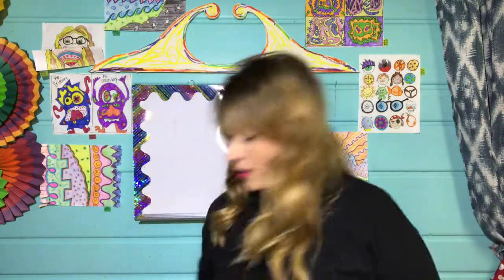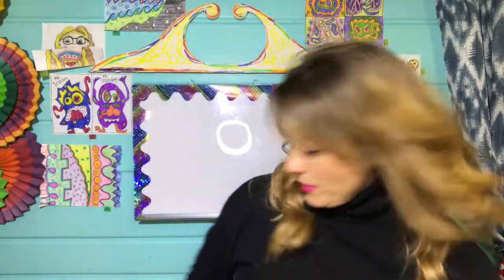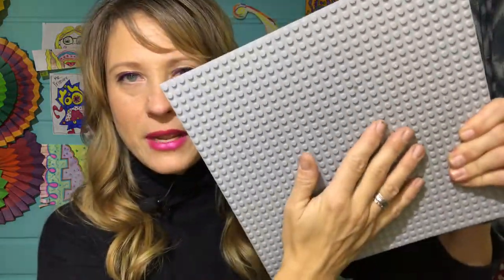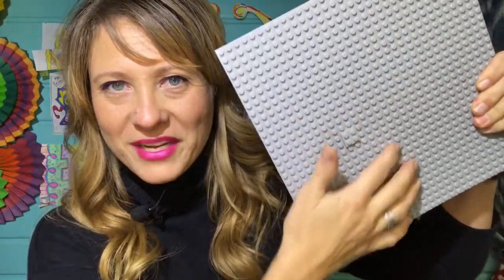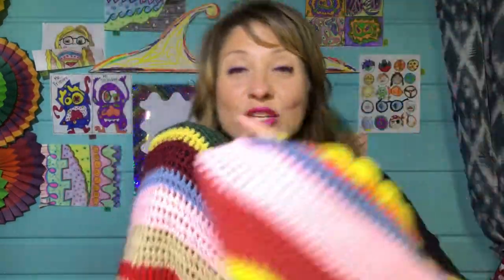There are two types of texture. One is real or actual texture and that is how something actually feels. Like, for example, a soft flower or a hard rock or maybe even a bumpity Lego plate, or the texture of a blanket. That is how something actually feels when we touch it. And some artwork has actual texture.